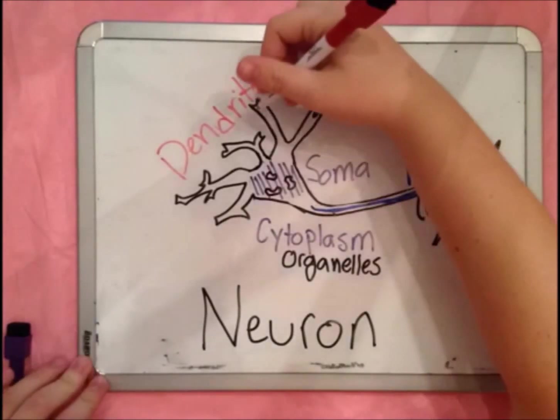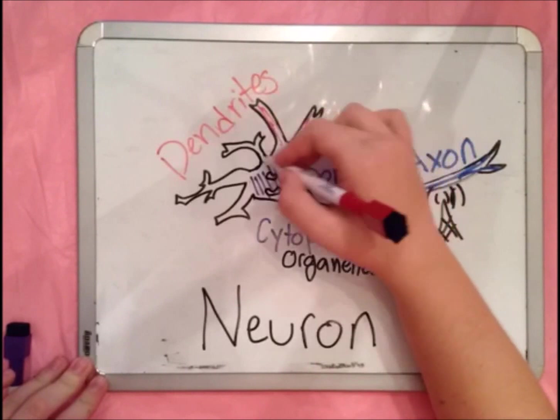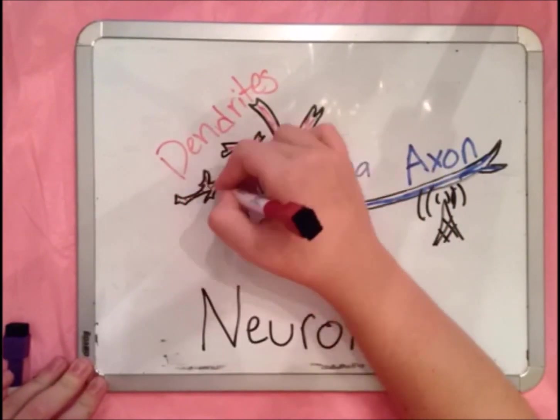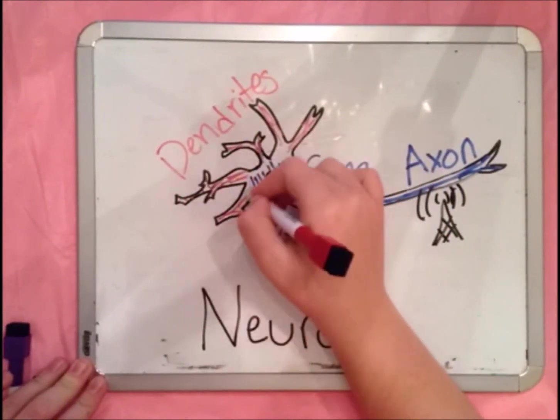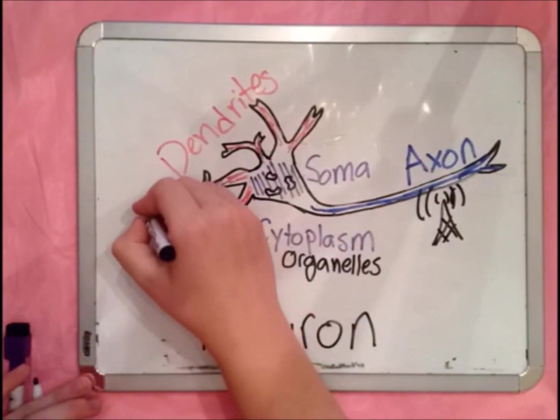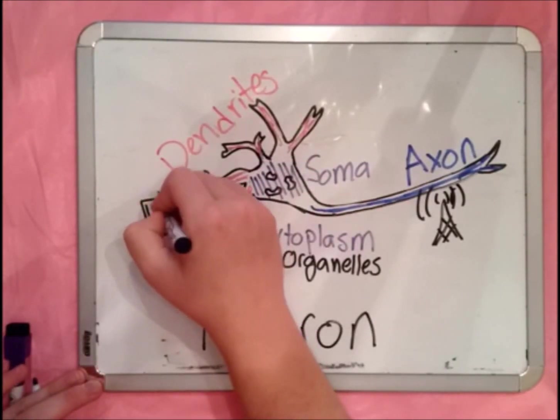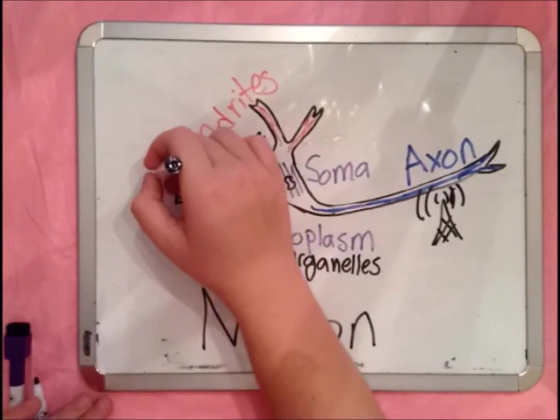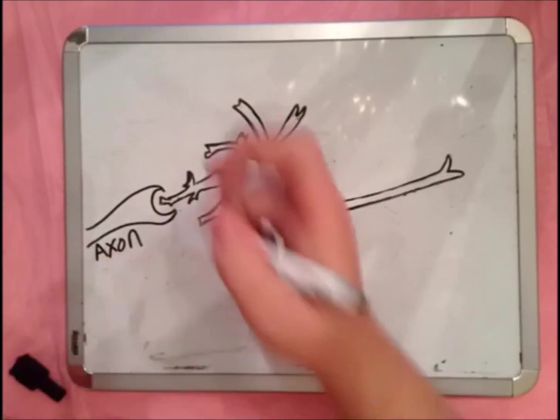This signal is received by the dendrites of a different neuron, like a cell phone receiving signals from the cell tower. Unlike axons, where there's only one per neuron, there can be many different dendrites coming from one neuron. Where the axon and the dendrite meet, there is a little gap called a synapse.